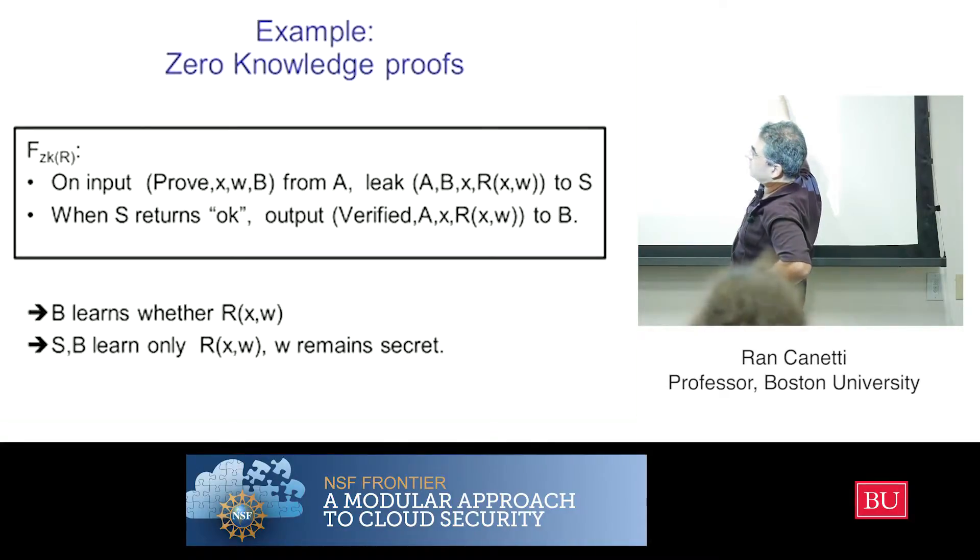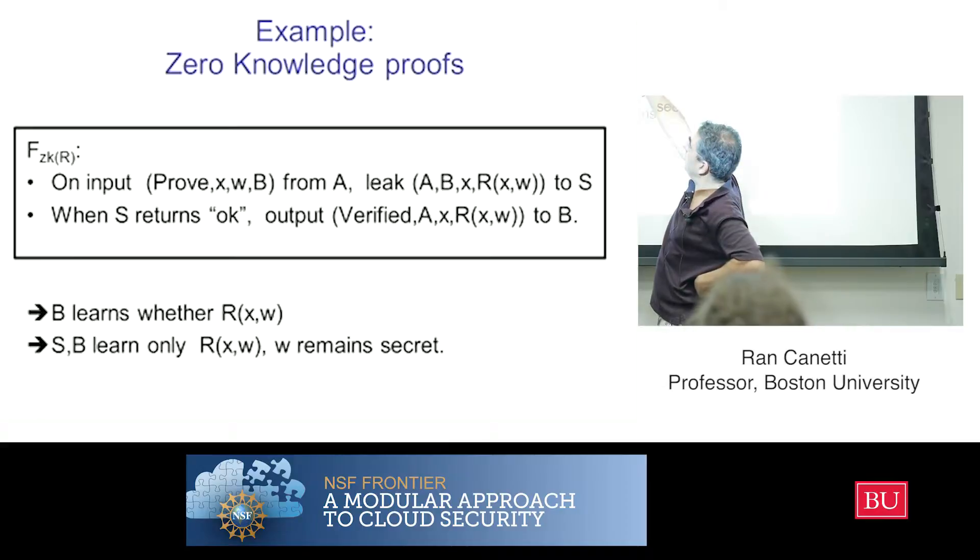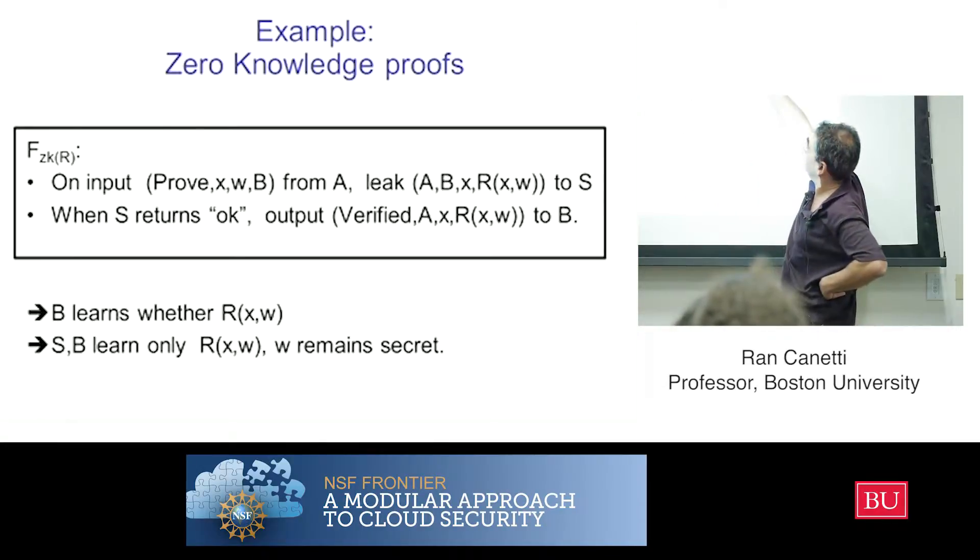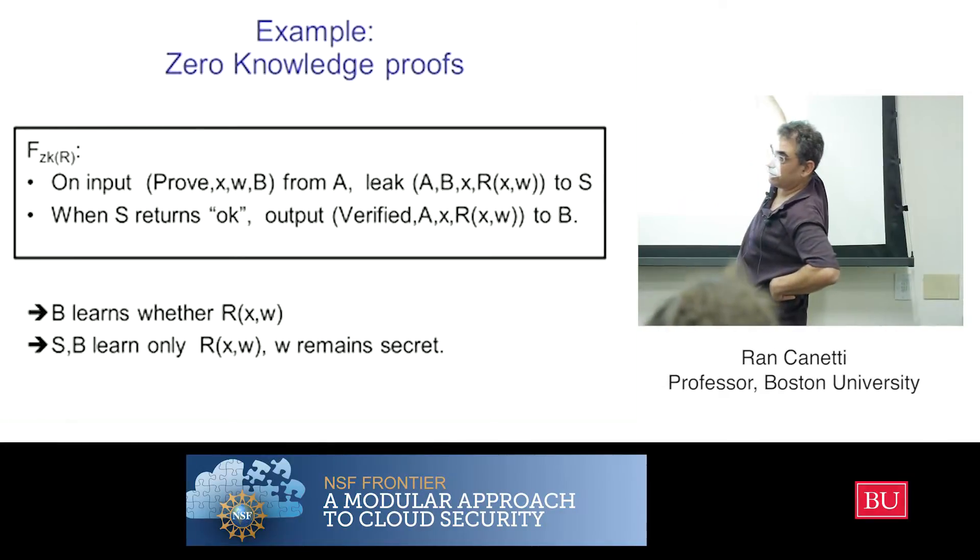And then when the simulator returns okay, then it's going to output the value to B. So what's going on here? It's a little bit like this authenticated message transmission and the encryption or the secure message transmission. There is some information being passed over the network from A to B, right? And some information is kept secret and some information is being revealed.